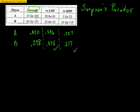How does that make sense? The numbers don't lie — I didn't change any of these numbers. A is better overall, but individually in each category — left-handed and right-handed pitchers — Player B is better. How is this possible? It kind of makes you think a little bit.